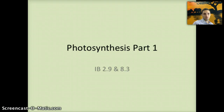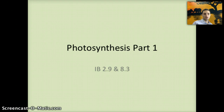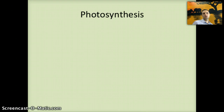This will be the first part of our photosynthesis videos. In these videos we will look at and examine how photosynthesis is able to produce sugar in plants and in some bacteria. This is for IB sections 2.9 and 8.3 and for the 2016 exam material. In this first video we're going to introduce what photosynthesis is, give a quick overview, and look at conditions that can affect the rates of photosynthesis and how we can measure it.